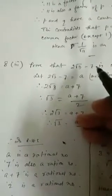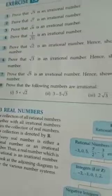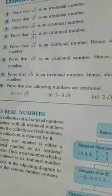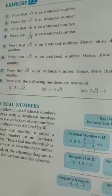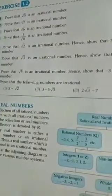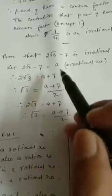Now one more question — question number 8, third part: prove that 2√3 − 7 is an irrational number. Let 2√3 − 7 be a rational number equal to a.